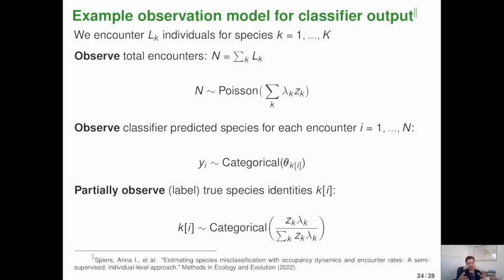But we know that these classifiers are imperfect. Right. And so for a subset of those encounters, we are going to observe the true label that you feed this to an expert labeler. And so the true species identity of each encounter, this is this K bracket I, is observed in some cases. And we can build all of this into one model that critically links the output from a classifier YI to ecological parameters that we actually care about, which would be like the occupancy state Z or the encounter rate Lambda. And so this is a really interesting sort of new class of models that I hope we can continue to riff on and develop.